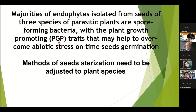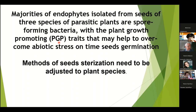In conclusion, our studies have shown that the majority of endophytes isolated from seeds of these species are spore-forming bacteria. Those bacteria produce growth-promoting factors that may help combat stress related to abiotic conditions — such as high salt and high temperature — and may help seed germination. Finally, methods of seed sterilization and DNA isolation of endosymbionts need to be adjusted to the specific plant species, as there is no general method applicable to different seeds of parasitic plants.